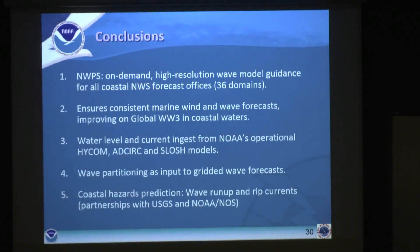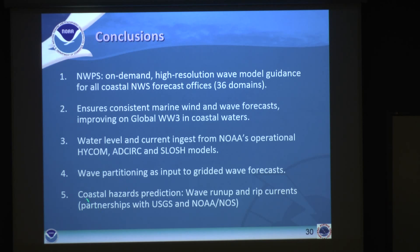To conclude, the Nearshore Wave Prediction System is an on-demand, high-resolution downscaling wave model guidance system for all 36 coastal office domains in the U.S. Being driven by forecasted consensus winds makes wave conditions and wind conditions totally consistent, improving accuracy over the global wave model. It includes water levels and surface currents especially tied to surge events, effects like the Gulf Stream from the HYCOM model, wave partitioning that gives more definition to the forecast beyond just integral quantities, and the inclusion of coastal hazards of wave run-up and rip currents to protect life and property in the U.S. Thank you.